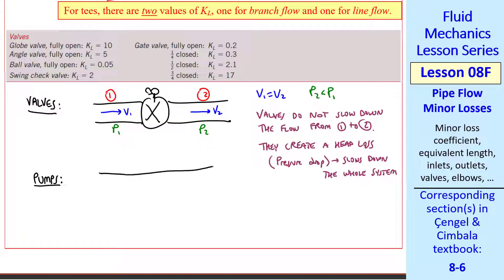This is the exact opposite of pumps, by the way. For a pump, V1 is equal to V2, but P2 is greater than P1. So pumps do not speed up the flow from 1 to 2.